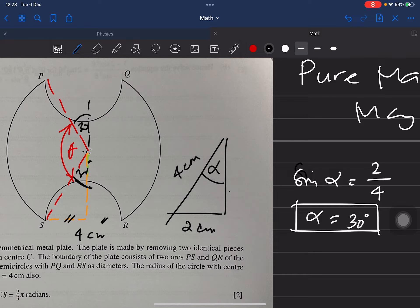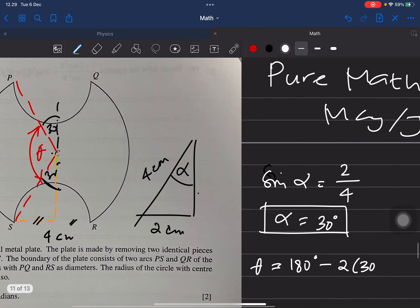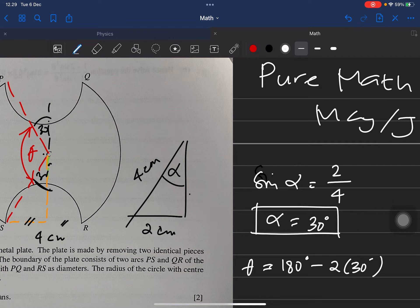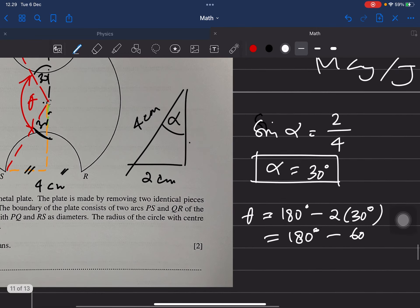So theta is 180 minus 2 times 30 degrees. So 180 minus 60, or 120 degrees.